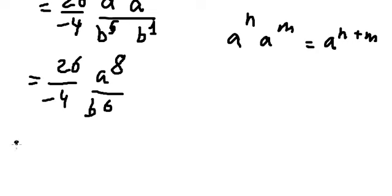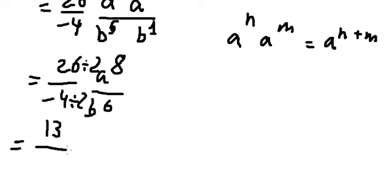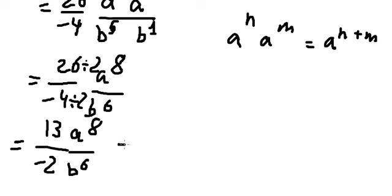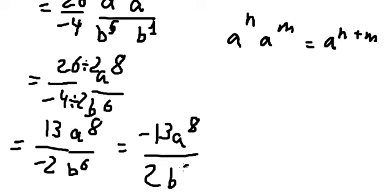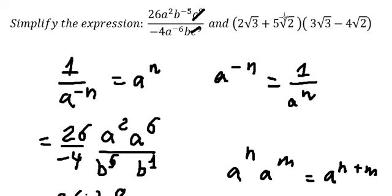For this one, we can divide by 2 on the numerator and denominator. 26 divided by 2 gives us 13. We have number 2, and we can put the negative in here. This is the final answer. Now let's go to the next one.